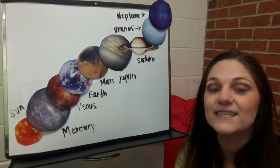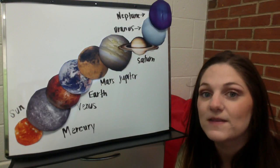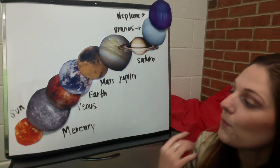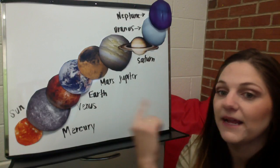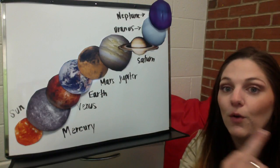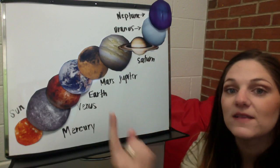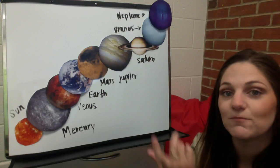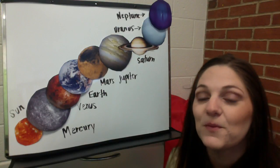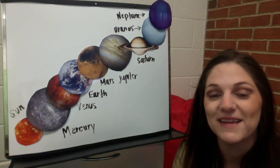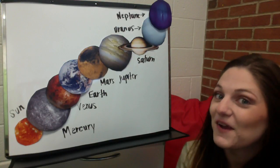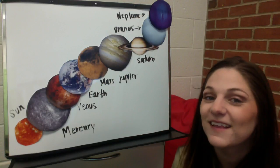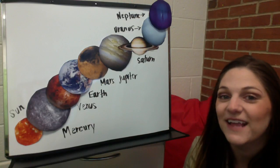Our Sun has eight planets that orbit around the Sun. The Sun stays still in one spot, and the planets go around the Sun and spin around the Sun. That's what the word orbit means. Are you ready to sing along with me? Let's sing this song again.